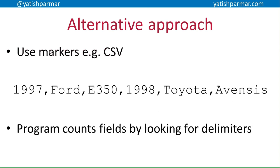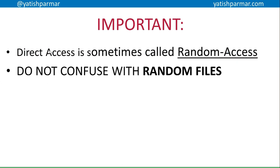An alternative approach is to use markers. For example, in a comma-separated values (CSV) file you can see some sample data — three records about cars. The program counts the fields by looking for a delimiter, which is a special character used to mark the separation between two fields.